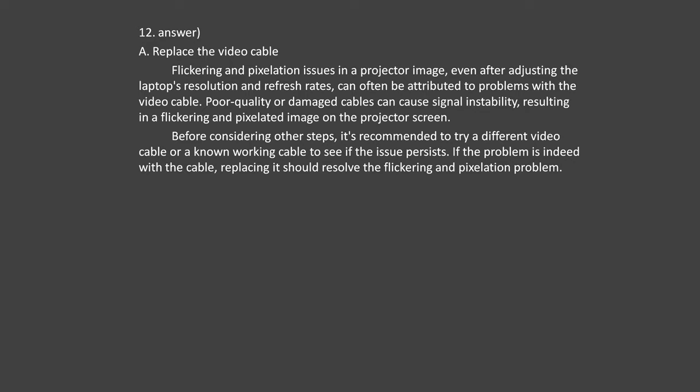Question number 34. A desktop computer has just abruptly shut off, and pressing the power button doesn't restart the system. There are no fans spinning, no lights are on, and no messages appear on the display. Which of these would be the most likely cause? Option A: The boot sector is missing. Option B: The master boot record is corrupted. Option C: The BIOS is configured with a startup password. Option D: The power supply is faulty. Option E: The LCD display backlight has failed. Answer number 34: Option D — the power supply is faulty.